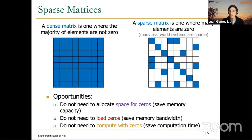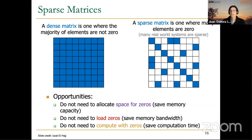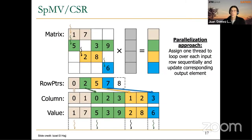Sparse matrices are very challenging because most of their elements are zero. But they also represent opportunities: we can save space, save memory bandwidth, and save computation because we don't need to operate on zero elements. Due to that, the most common way of storing sparse matrices in memory is using some compressed format.